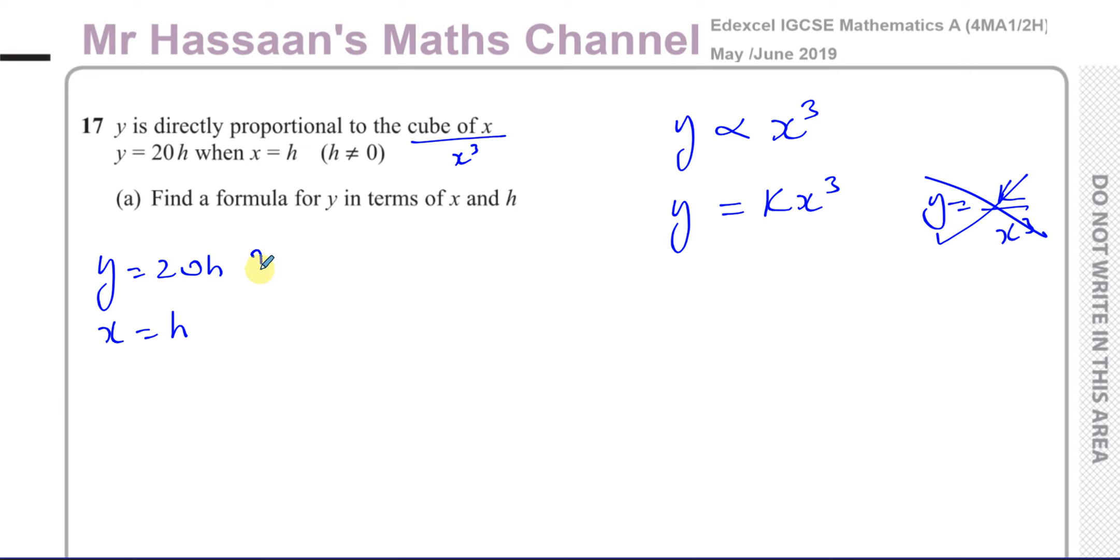Now we can use this pair of values to find what k is in terms of x and h. They told us that y is equal to 20h, while x is equal to h. So we have 20h equals k times h cubed. So we've got 20h divided by h cubed is equal to k. That cubed is only for the h. One of those will cancel out from the top and the bottom. So we're left with 20 over h squared equals k.